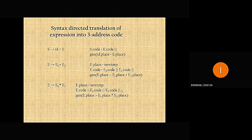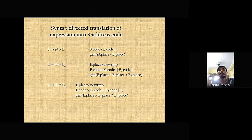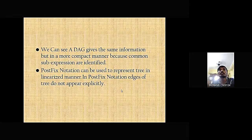We can do it by using the place value of id and assigning it to the place value of E. This is a basic example of a simple statement production rule. In the next case, it is an arithmetic expression of E, and similarly the place value of E is assigned a new temporary variable which is newtemp. In order to find the three-address code of E, we use the function of generating the place value of E and appending it with the place values of E1 and E2. Similarly, the second part, which is the multiplicative expression production, is created.